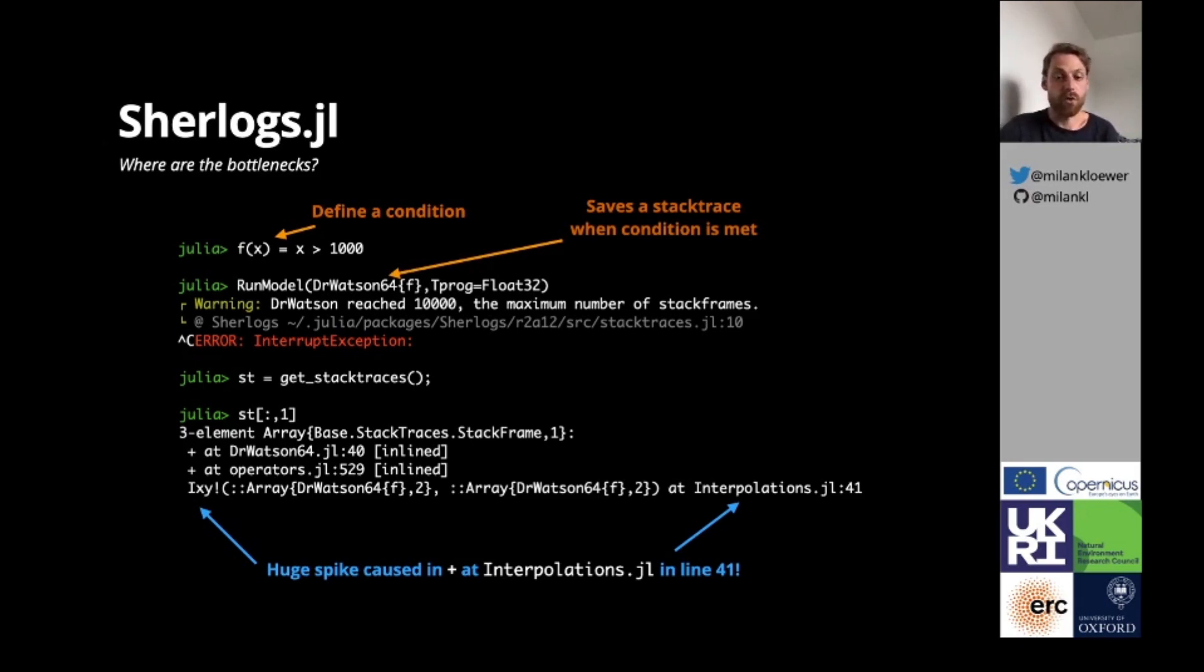We can now investigate whether we should reorder operations in this line. In this case, the spike actually can be removed by swapping a multiplication into an addition. This is all work in progress that I use within my research and I'm more than welcome for any comment and suggestions.